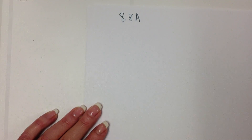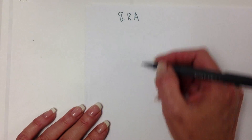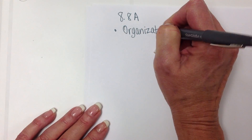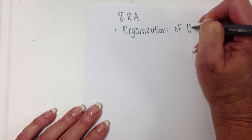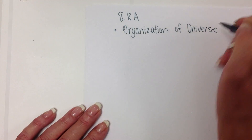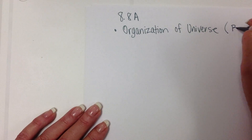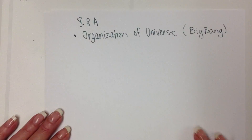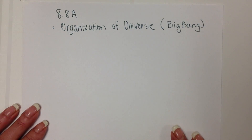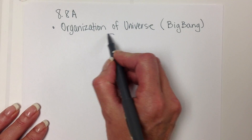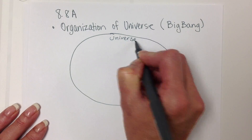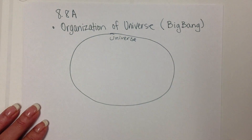We're going to start with the organization of the universe. Remember that the universe is said to have started with the Big Bang — that is the theory of how the universe originated. The biggest thing out there is the universe. We don't know for certain if it started with the Big Bang or not; that is the theory, and we'll go with it for now.